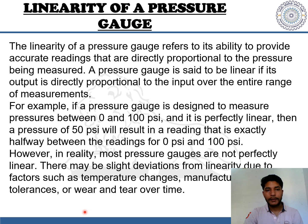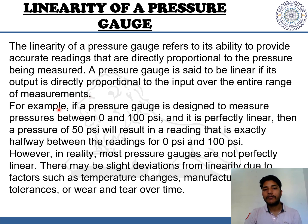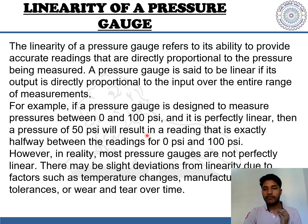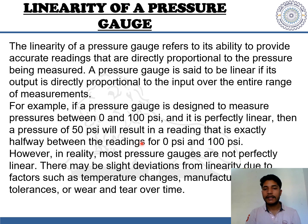Now let's look at the linearity of a pressure gauge. Linearity refers to its ability to provide accurate readings that are directly proportional to the pressure being measured. A pressure gauge is said to be linear if its output is directly proportional to the input over the entire range of measurements. For example, if a gauge is designed to measure pressures between 0 and 100 psi and is perfectly linear, a pressure of 50 psi will result in a reading exactly halfway between 0 and 100 psi.